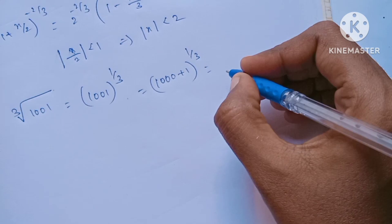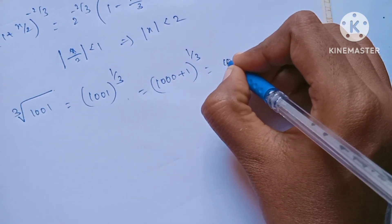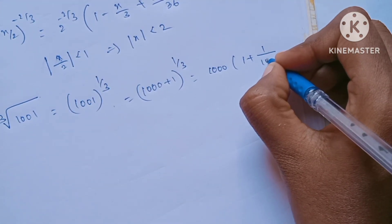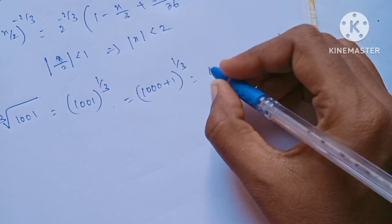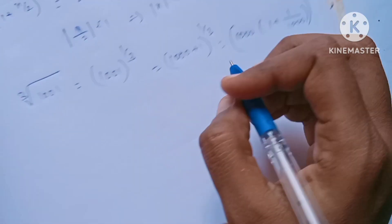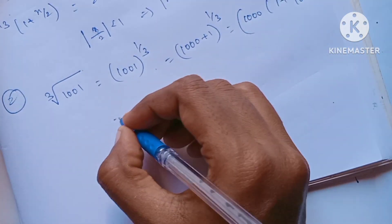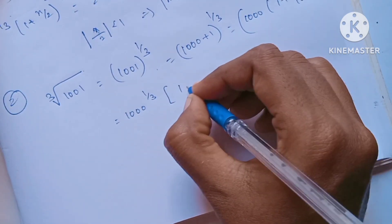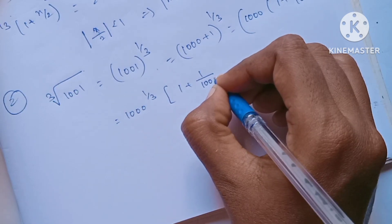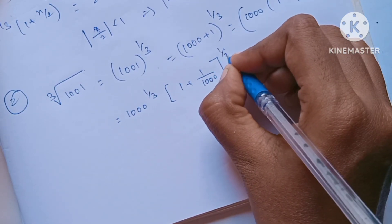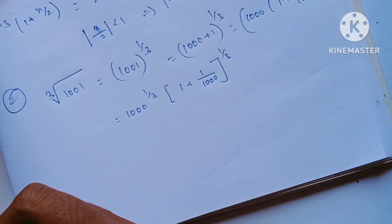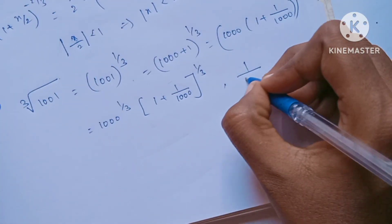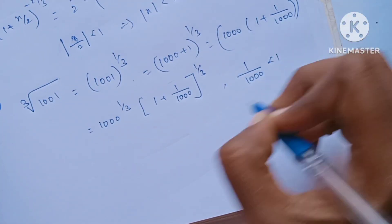Now we will find the value of 1000. We write it as 1000 into (1 + 1/1000) whole power 1 by 3. So we get 1000 whole power 1 by 3, into (1 + 1/1000) whole power 1 by 3. Here 1/1000 is less than 1.